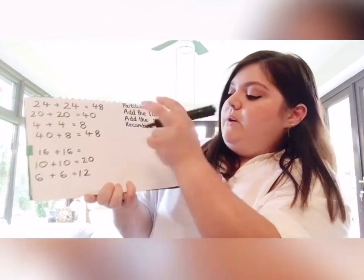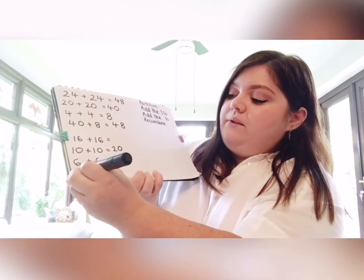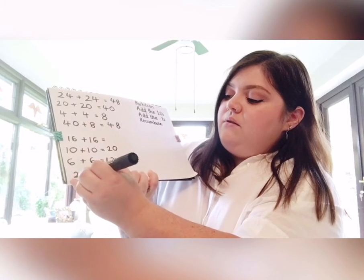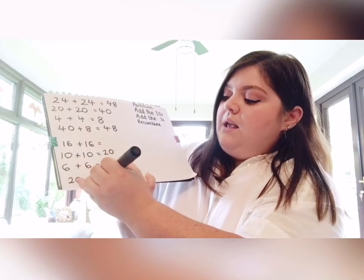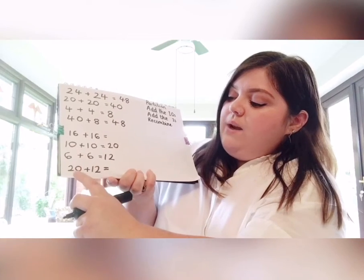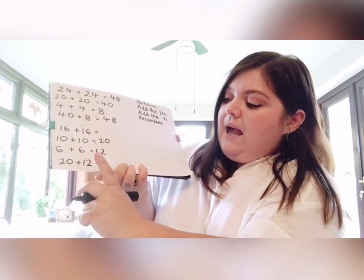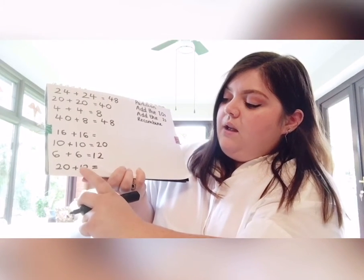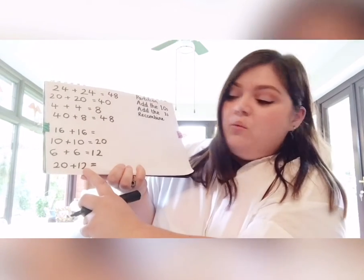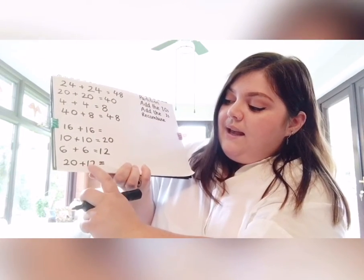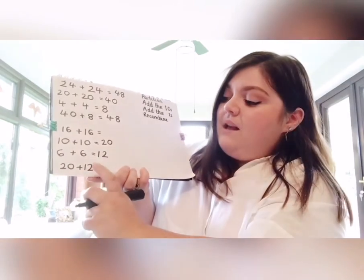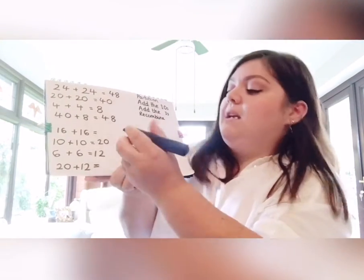Then we need to recombine. So 20 add 12 equals... In this one I have one 10 and two ones. So 20, add a 10, 30, add two more, 32.